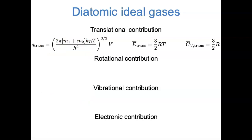The good news is that we've already dealt with translational motion in the previous video, when we looked at monatomic ideal gases. We found the translational partition function, the molar energy, and heat capacity, and all of those things still apply. The only small difference is that the mass, which was m in the previous video, is now m1 plus m2. The translational contribution of the molar energy is still 3/2 RT, and the translational component of the molar heat capacity is still 3/2 R.